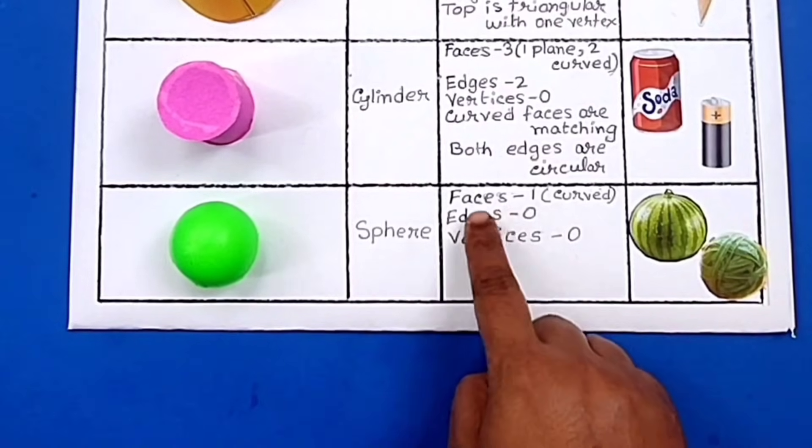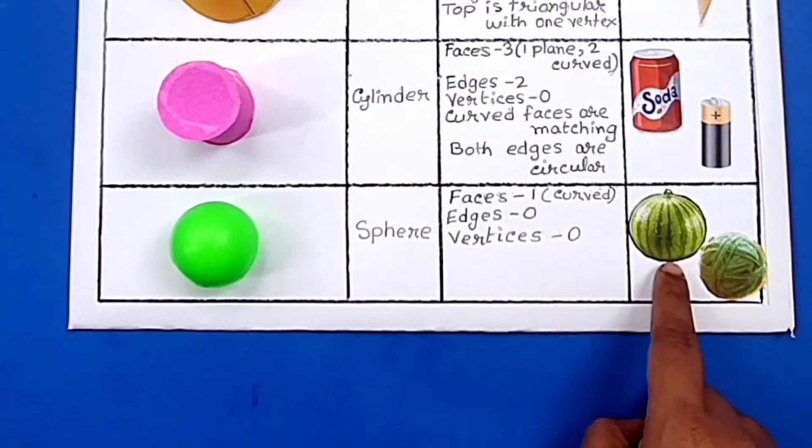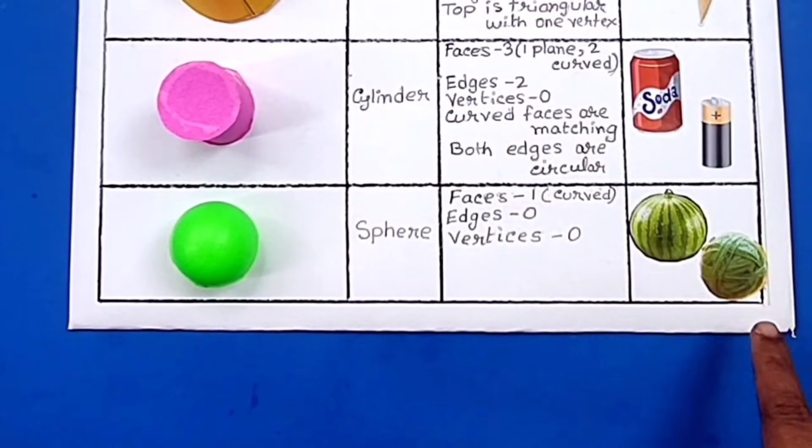The next shape is sphere. It has one curved face, zero edges, zero vertices. Examples are watermelon and yarn.